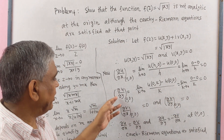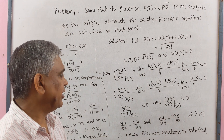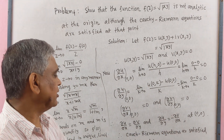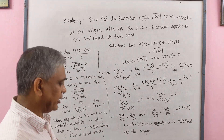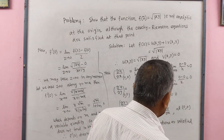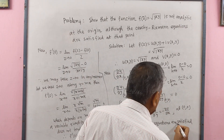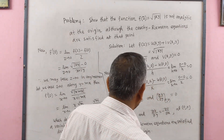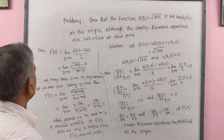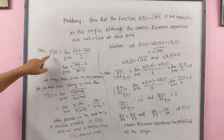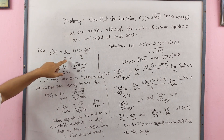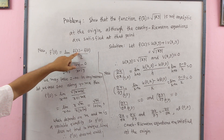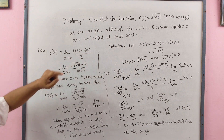We have ∂u/∂x = ∂v/∂y = 0 and ∂u/∂y = −∂v/∂x = 0 at the origin. So the Cauchy-Riemann equations are satisfied at the origin. Now we check whether f'(0) exists by computing the limit: f'(0) = limit as z→0 of [f(z) − f(0)] / z.